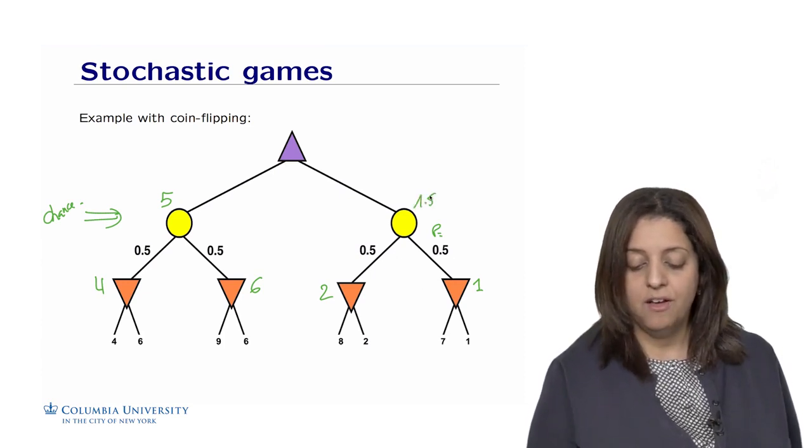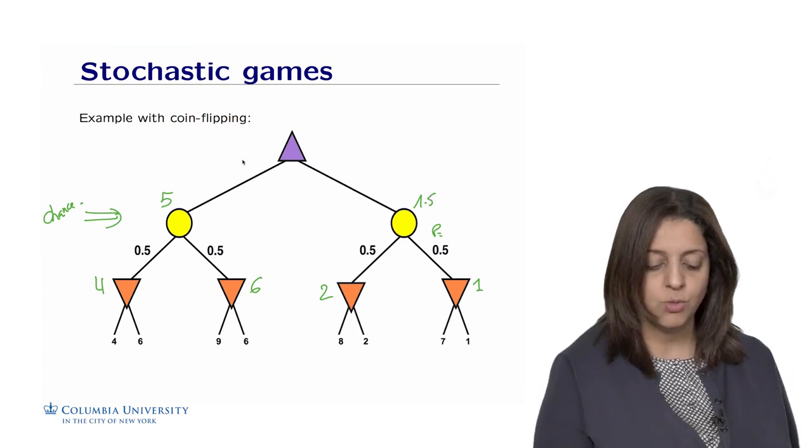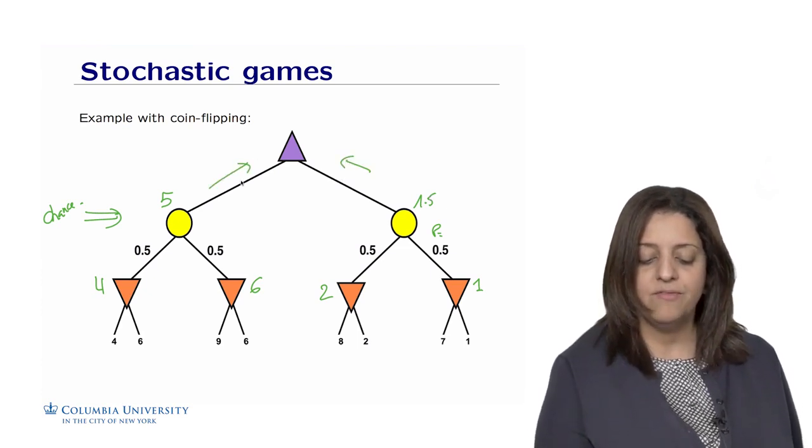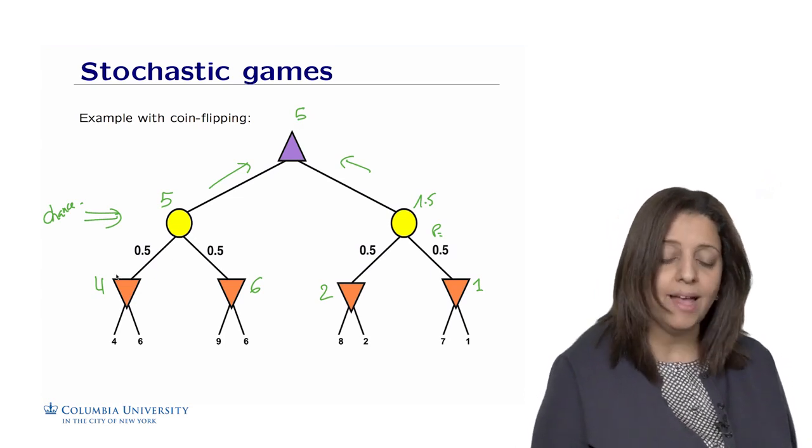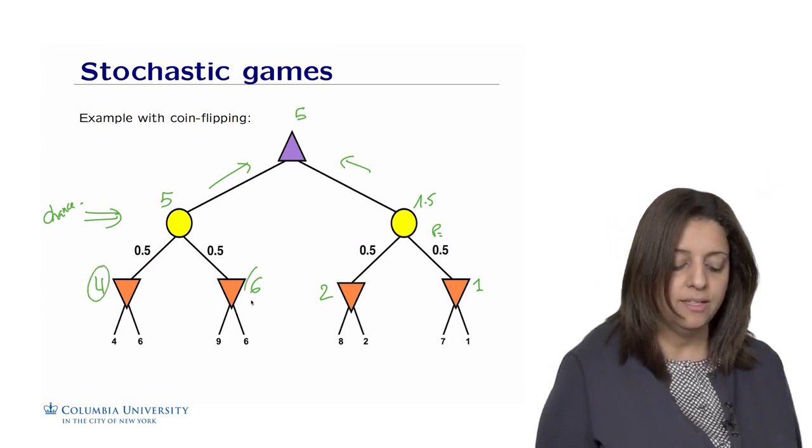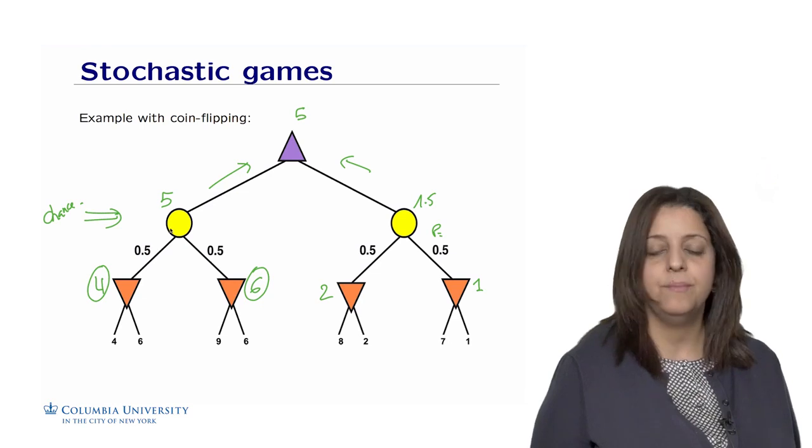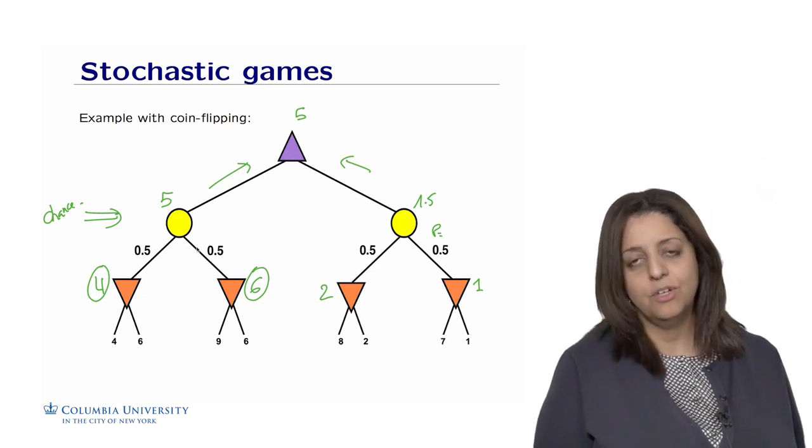This is the average of the outcome weighted by the probability of 0.5 for each outcome of flipping the coin. We get a value of 1.5. Then max will take the maximum value of these two outcomes and end up with 5. This is how we weight the min value that is sent back from the leaves by these chance nodes.